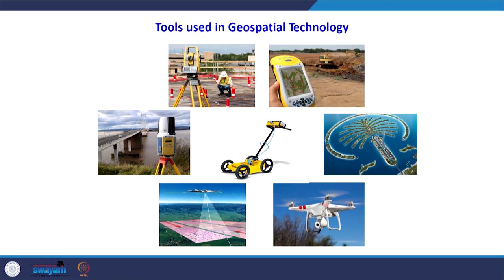We are going to learn all these instrumentations and how they can be used to collect data about the earth surface. In this figure, you can see at the top an instrument we call a total station — some people call it an electronic theodolite because data is collected, stored, and analyzed in digital mode. The advanced version is the robotic total station or laser-based devices, which further reduce manpower requirements and make data collection much faster. These devices provide us the coordinates of various objects on the earth surface.